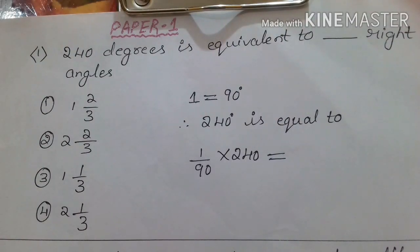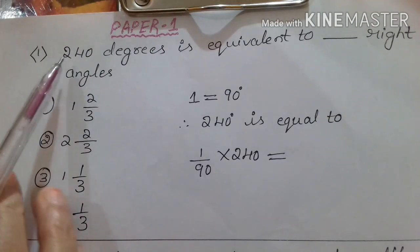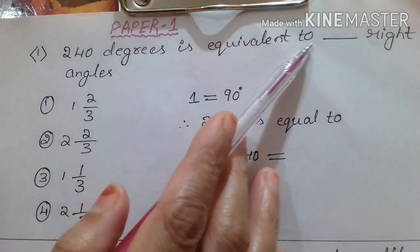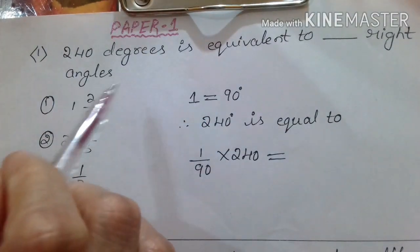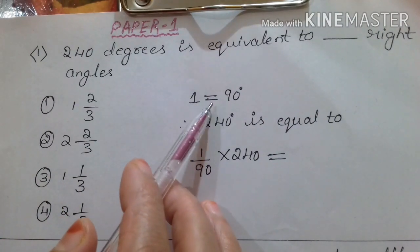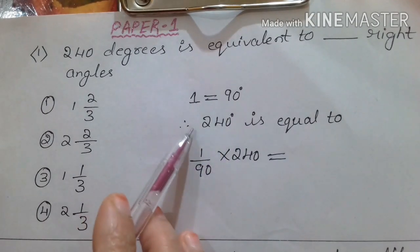Hello friends, welcome to my channel all about education. Today we will learn some questions from paper 1. First question: 240 degrees is equivalent to how many right angles? One right angle is equal to 90 degrees, therefore...